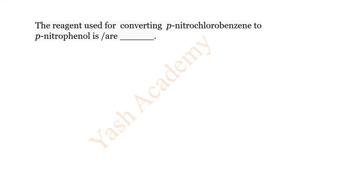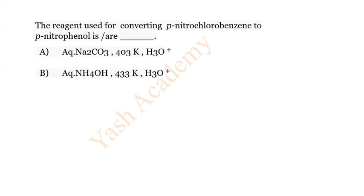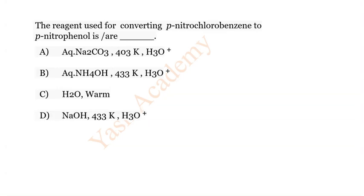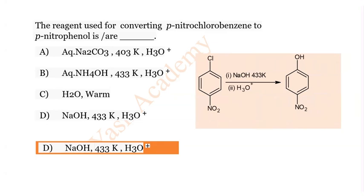Question 10: The reagent used for converting para-nitrochlorobenzene to para-nitrophenol. Options: A) Aqueous Na₂CO₃ at 403 K then acid hydrolysis, B) Aqueous NH₄OH at 433 K then H₃O⁺, C) Warm water, D) NaOH at 433 K then H₃O⁺. The correct answer is D) NaOH at 433 K followed by H₃O⁺.